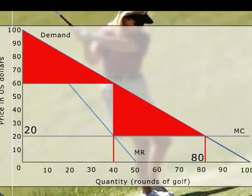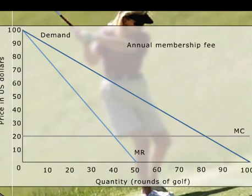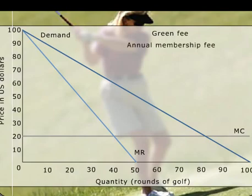Many courses use a two-part tariff to capture these additional consumer surpluses. The fixed fee is the annual membership fee. The variable fee, called a green fee, is paid each time members play a round of golf. The challenge is to find the prices to charge for these fees.